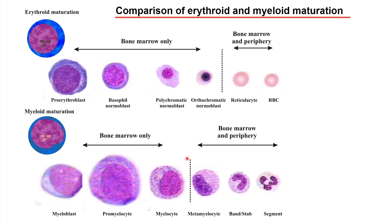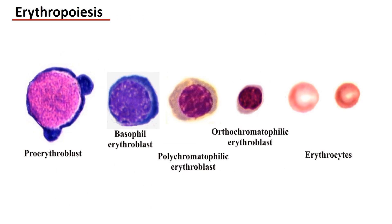Normally, the myelocyte is the last dividing step inside the bone marrow. Later on, the nucleus is maturing. First, a bean shape occurs — that's called the metamyelocyte or juvenile. We do have a neutrophil, eosinophil, or basophilic metamyelocyte, and later on the band-shaped or stab form, and the final one is the segmented form, when we do have a very densely compact nucleus — neutrophil, eosinophil, and basophil.